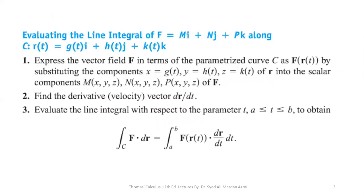How can we evaluate it? To calculate the line integral of F, where F is a force represented by F equals M·i plus N·j plus P·k, along a smooth parameterization curve R of T equals g(t)·i plus h(t)·j plus k(t)·k — in step one, we express the vector field F in terms of parameter t. We calculate F of r(t) by substituting x equals g(t), y equals h(t), and z equals k(t).